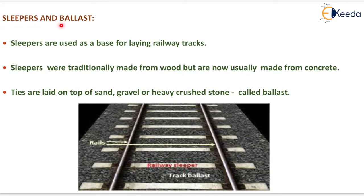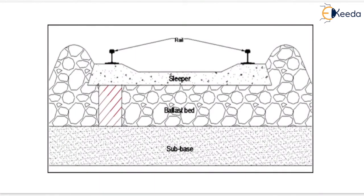The next topic is sleepers and ballast. Sleepers are used as a base for laying railway tracks. Traditionally made from wood, they are now usually made from concrete. Ties are laid on top of sand, gravel, or heavy crushed stone called ballast. Here the railway sleeper, the track ballast, ballast bed, and rails are shown.